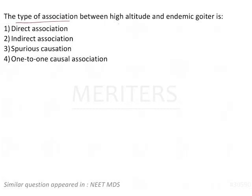The type of association between high altitude and endemic goiter - two factors, two variables. How are they associated with each other? The options are direct, indirect, spurious, and one-to-one causal association.